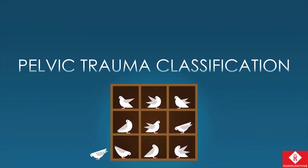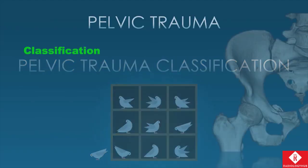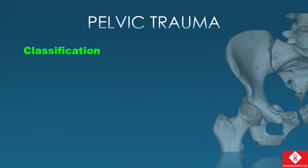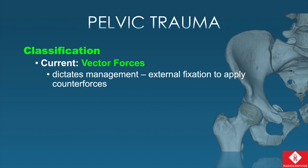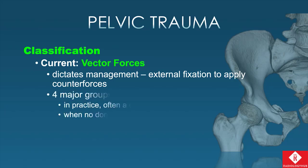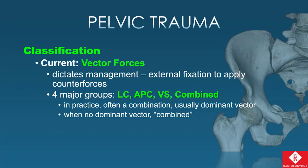For pelvic trauma classification, we look at vector forces, and this really dictates management — surgeons apply external fixation to apply counter forces to the injuring forces. We have four major groups: lateral compression, anterior-posterior compression, vertical shear, and combined. Typically there's not just one force going on, but usually a dominant vector can be identified on imaging. If there really is no dominant vector, or if you see two major patterns coexisting, we call those combined injuries.